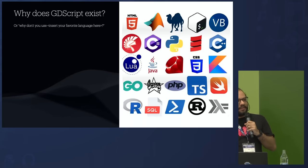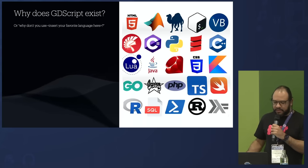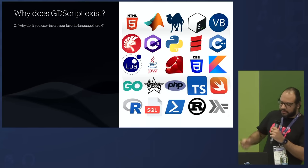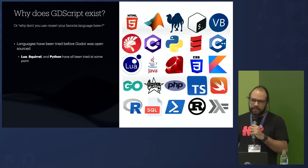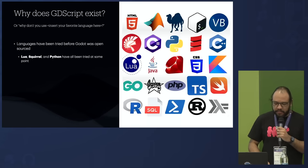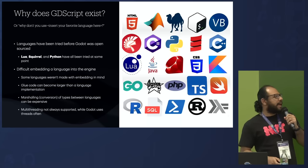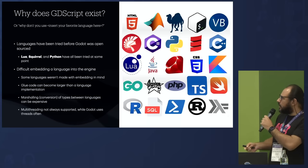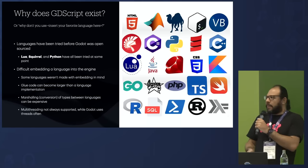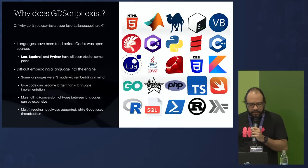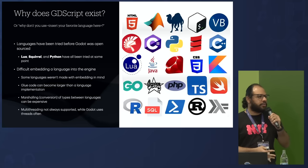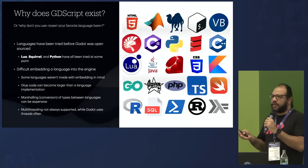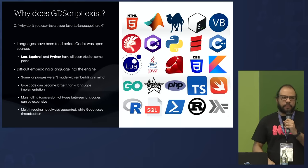Let's start with the past. Why does GDScript exist? Languages like Lua, Squirrel, and Python were tried before Godot was open-sourced, and they all had issues. There's difficulty embedding languages into the engine. Python was not really made to be embedded. Languages like Lua and Squirrel were, but they have other problems — you have to convert types between the engine and the language. If you have a Vector2, Python doesn't have a Vector2, and that conversion takes a lot of performance away.